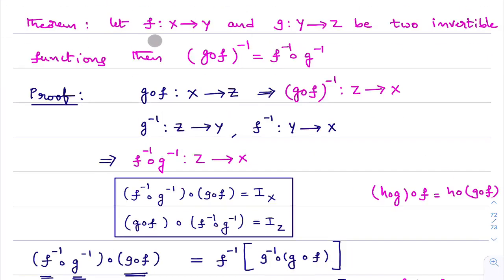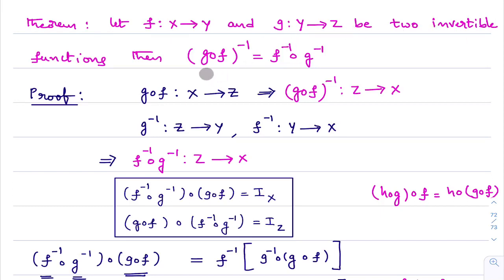Let f from X to Y and g from Y to Z be two invertible functions. Then g∘f whole inverse equals f⁻¹∘g⁻¹. We need to understand what this means: f from X to Y is invertible means f⁻¹ exists; g from Y to Z is invertible means g⁻¹ exists. We need to show that (g∘f)⁻¹ = f⁻¹∘g⁻¹.